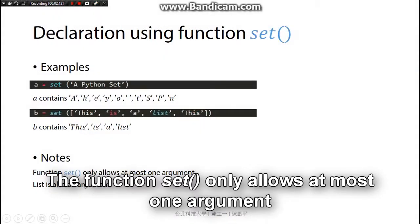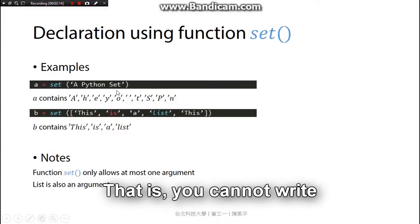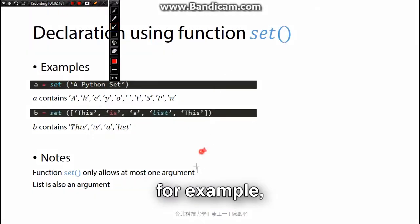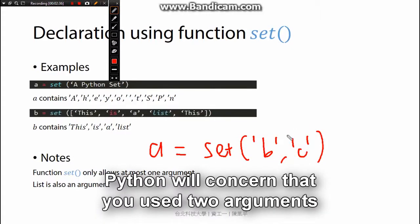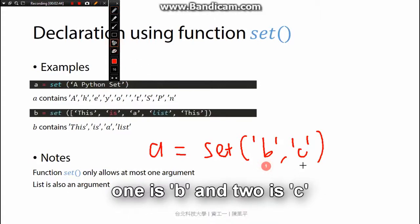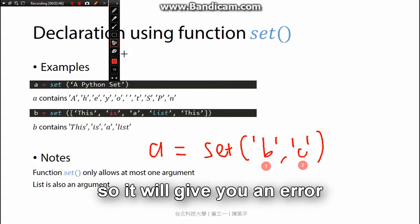For instance, set only allows at most one argument. That is, you cannot write, for example, a equal to set b, c. Python will be concerned that you use two arguments - one is this and two is this - so it will give you an error.